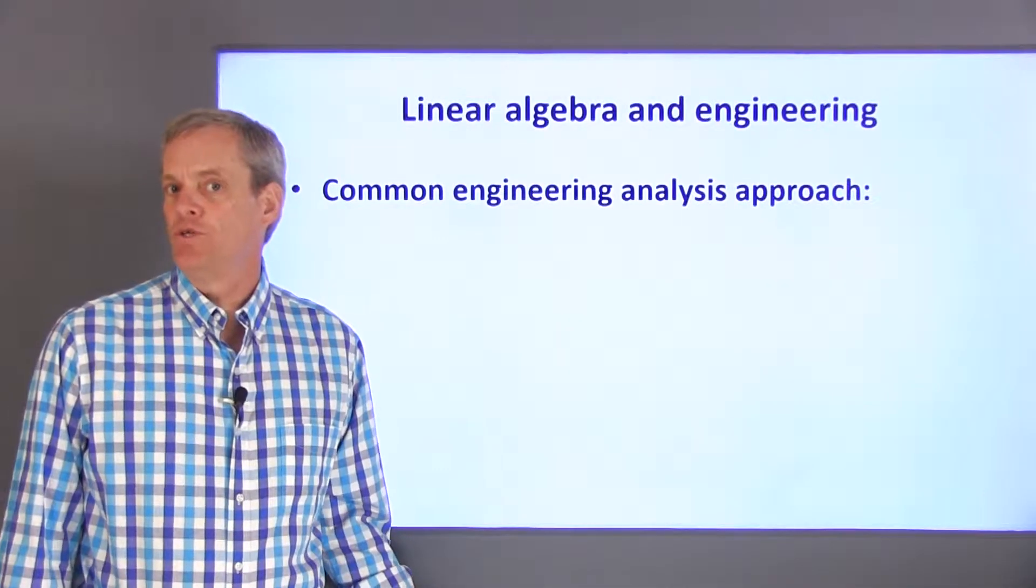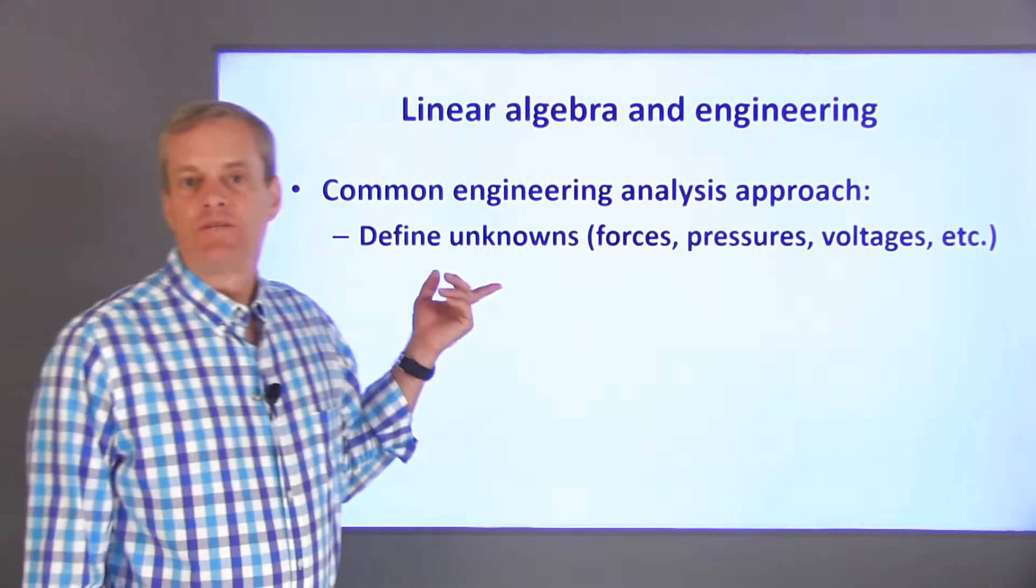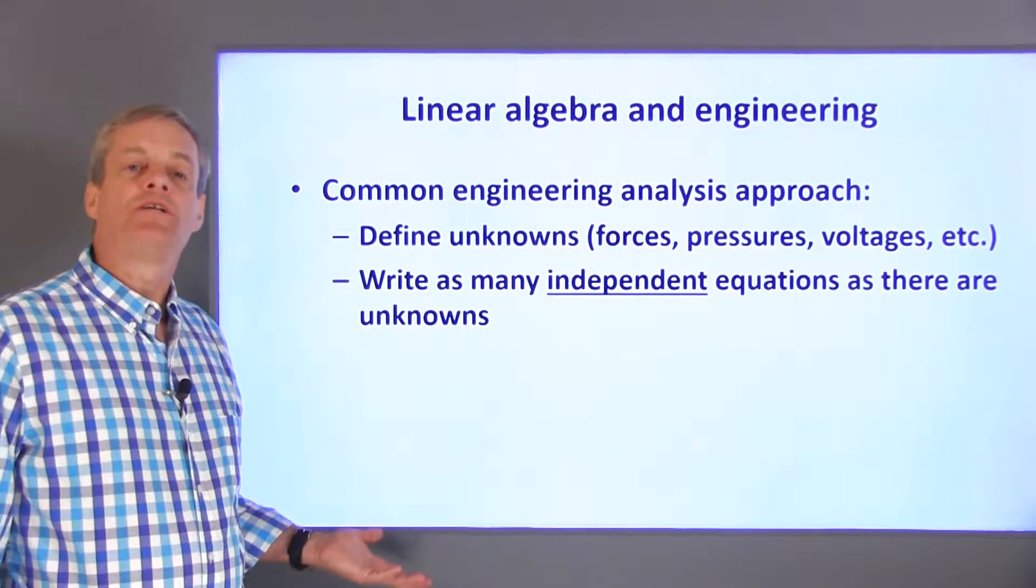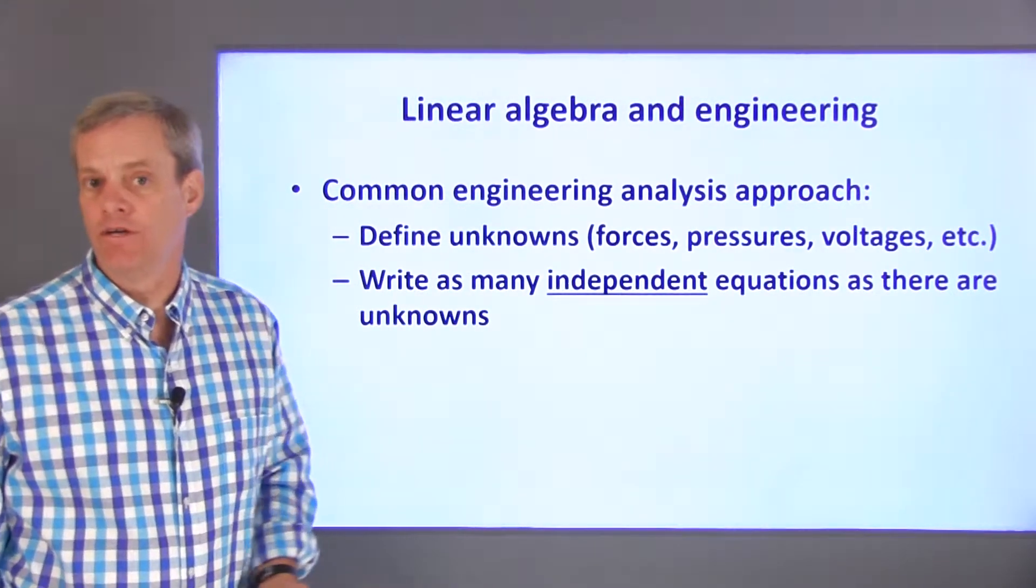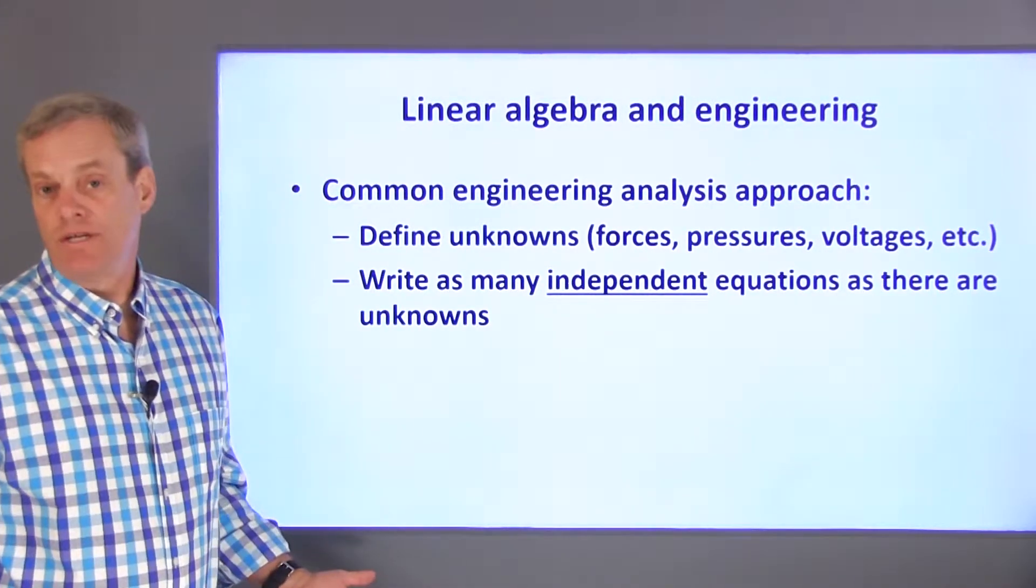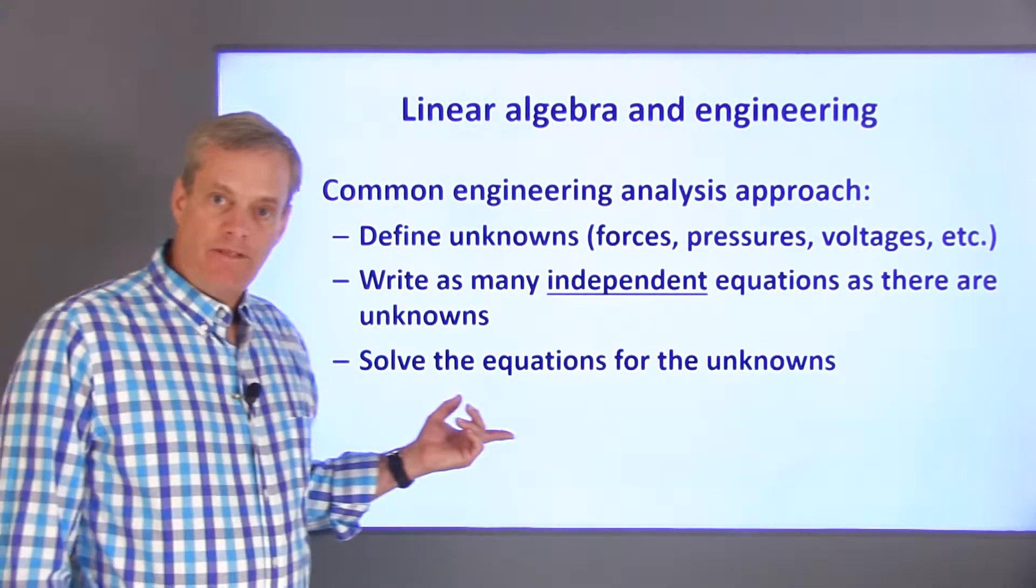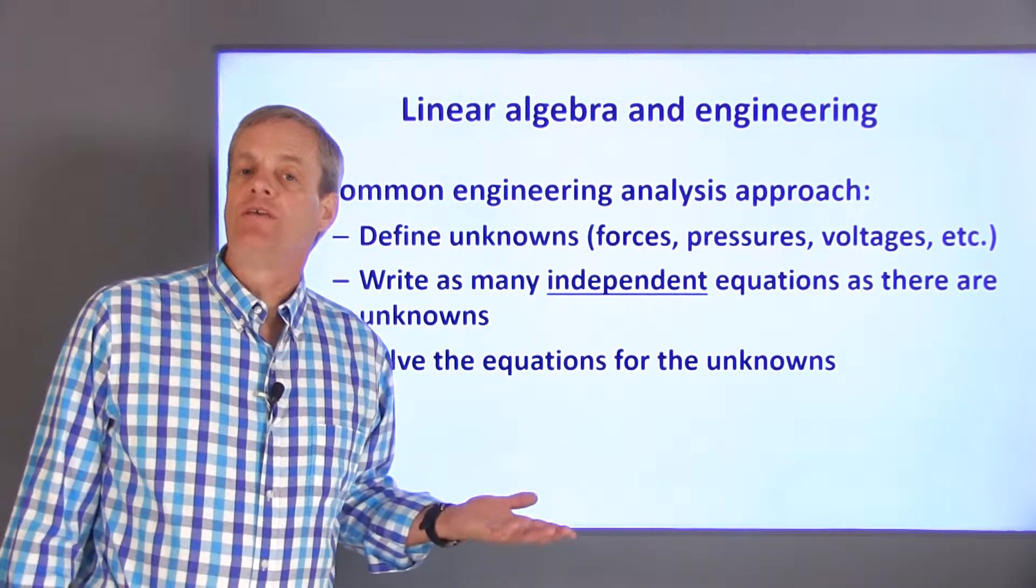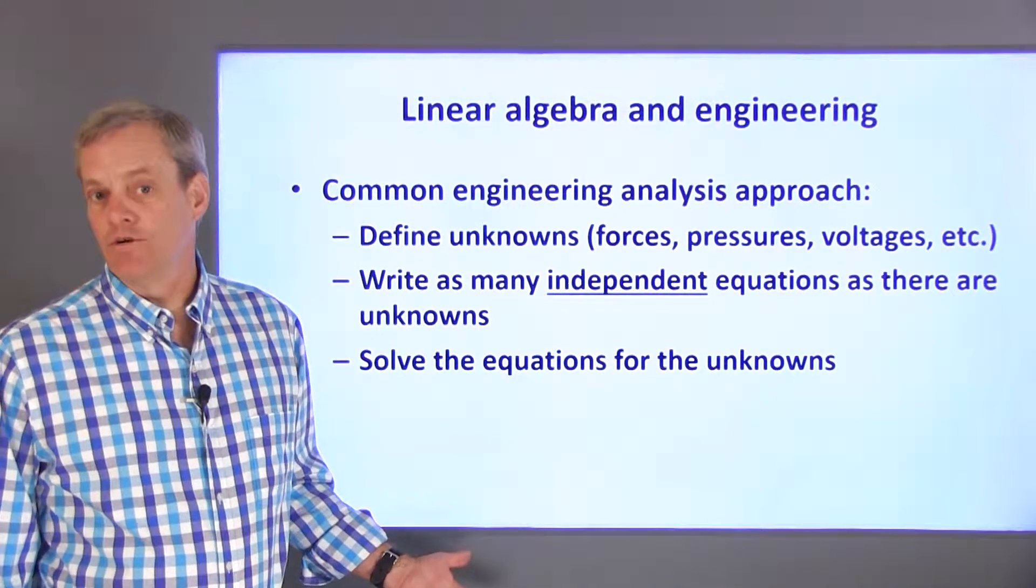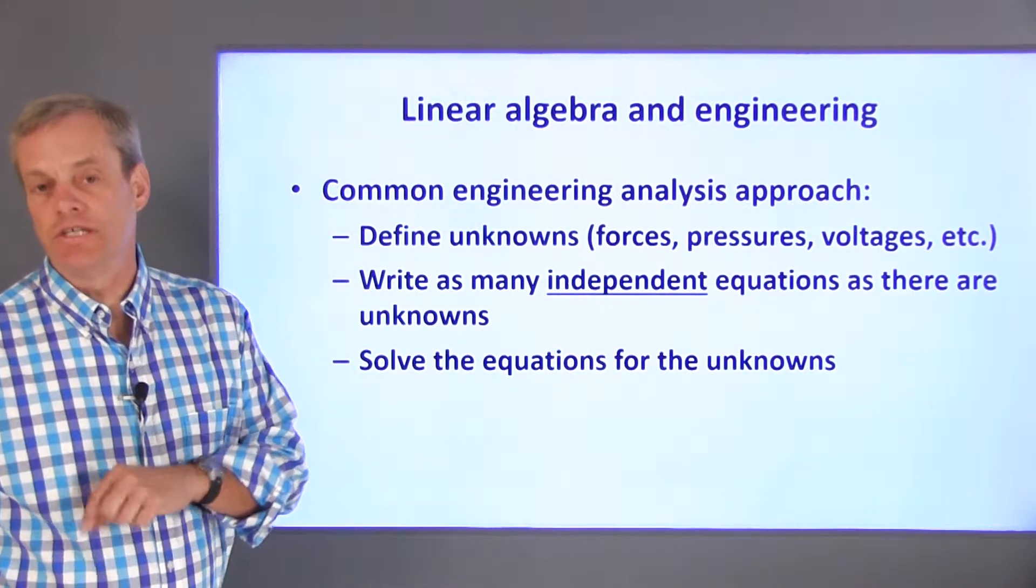First, I'll talk about a typical approach used to analyze engineering systems. Usually, the first step is to define the unknowns in the system. After defining variables, you'll want to write as many equations as you have unknowns. If these equations are independent, then they'll have what is called a unique solution, which means that there is only one solution. Once you have equations describing the system, you can solve the equations to determine values for the unknowns. If you've done your job correctly, solving for the unknowns in the governing equation will provide the information necessary to solve your original engineering problem.